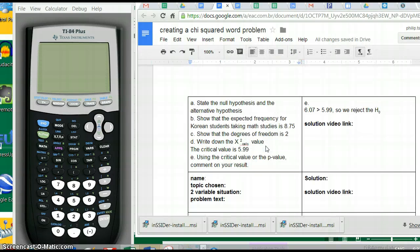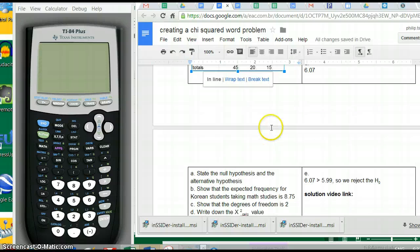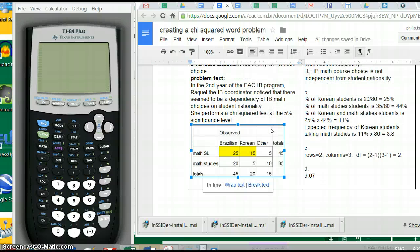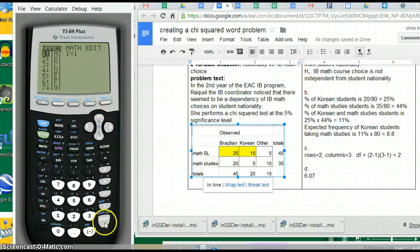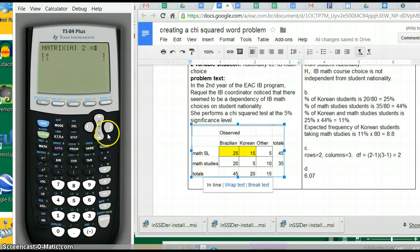The next question asks to write down the chi-squared calc value. We need to use the calculator to do that. We're going to input this data into the second matrix screen. Second matrix, and we'll put it into A. So we go to edit A. We're going to put a 2 by 3 matrix.